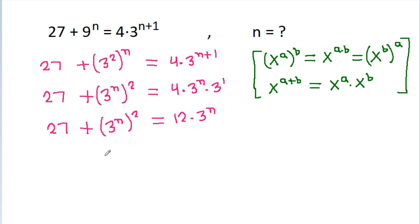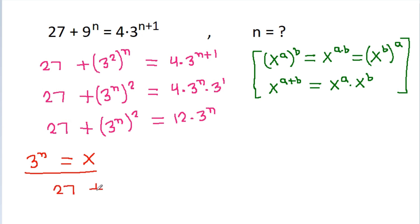If we take 3 power n equal to x, then it is 27 plus x squared is equal to 12 times x.